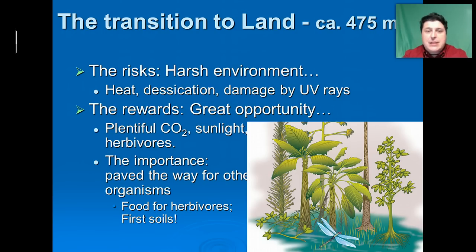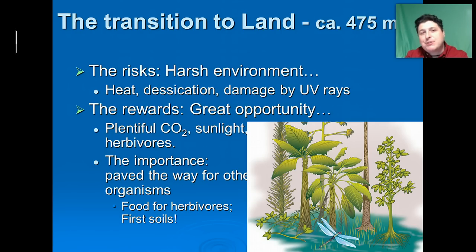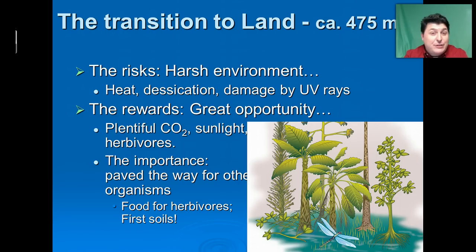Plants and algae began their life in the water, but in order for their history to end up where it is today, they had to move onto land. That movement onto land came with a lot of potential risks. For example, water has a high heat capacity, whereas on land, from morning to noon to night, the air temperature fluctuates greatly. There's also a greater chance for drying out — if you're living in water, you don't have to worry about that, but on land you do.